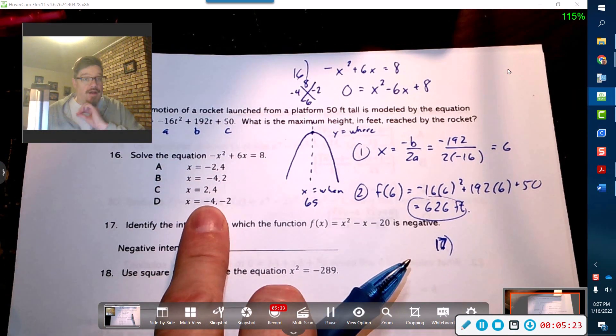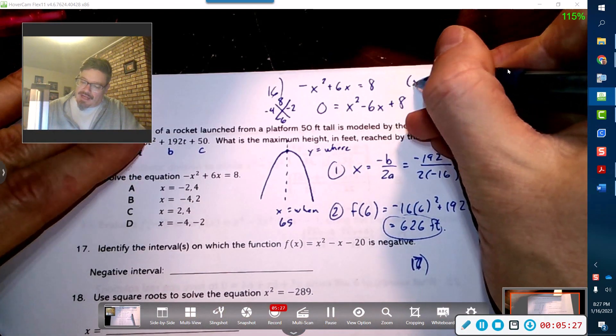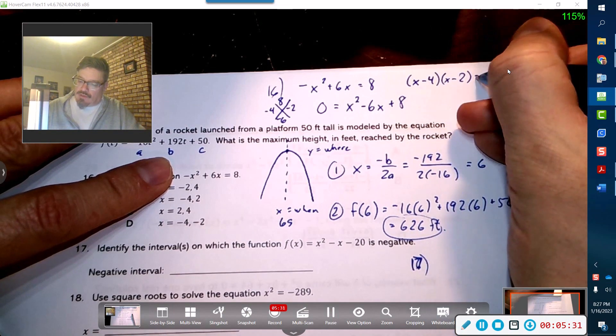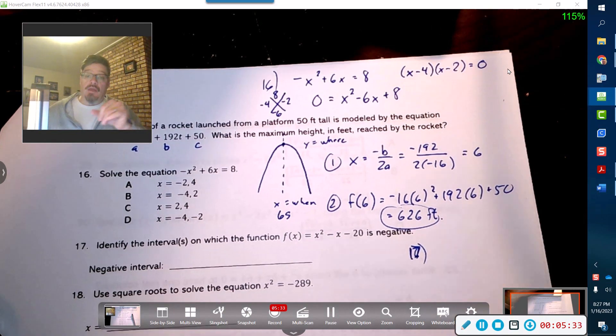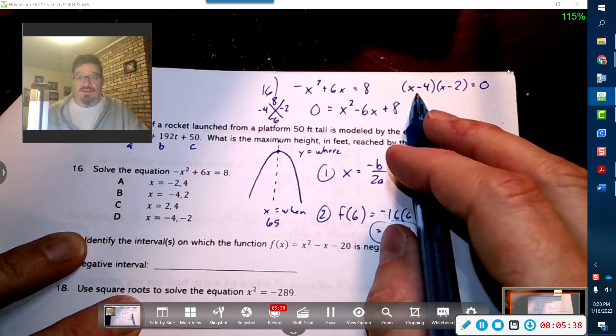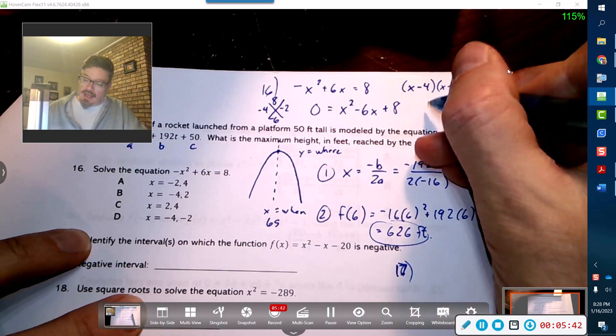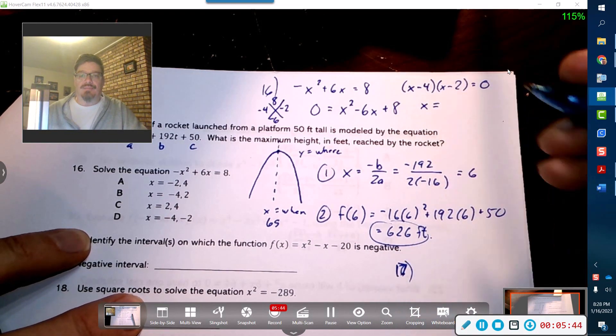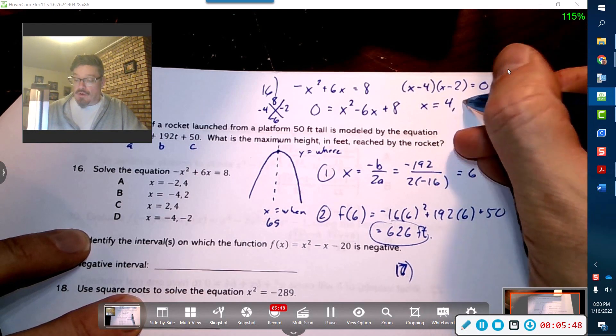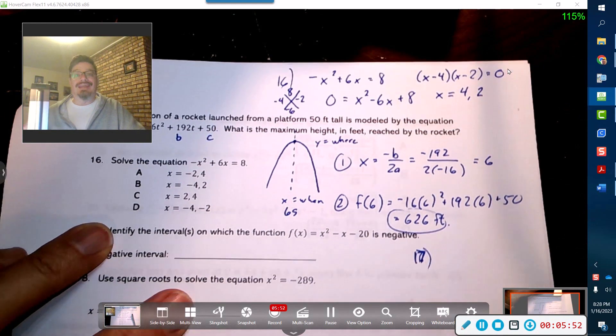So this means then that negative four and negative two are not my answers. What I've done is I've created x minus four and x minus two equals zero. So this means then I want to find a value that will give me zero for this parenthesis and find the other value that will give me a zero for this parenthesis. I need a positive four and a positive two to produce zero in both cases. So it's actually not these two, it's these two.